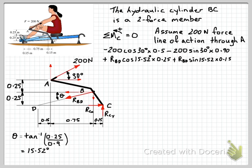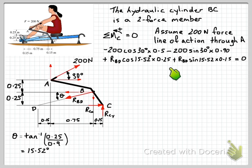There are no other forces acting apart from the reaction forces at C, which pass through point C and so have zero moment. Setting the sum of moments equal to zero gives us one equation with one unknown RBD — though with two terms. Rearranging the algebra gives us RBD equals 628.4 Newtons.